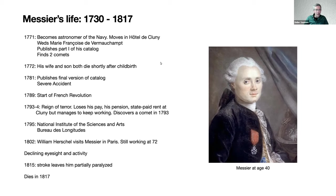In 1781, he published the final version of the catalog and suffered a severe accident, falling 25 feet inside an ice house. He broke his hip and several other bones and was bedridden for an entire year. In 1789, the French Revolution began, bringing great turmoil. In 1793 to 1794 was the Reign of Terror, with about 16,000 summary trials and public beheadings of monarchy, nobility, clergy, and anyone associated with the old regime. Messier escaped most of this, even staying in Paris, but lost his pay as astronomer of the Navy, his pension from the Académie des Sciences, and his state-paid rent at the Hôtel de Cluny.